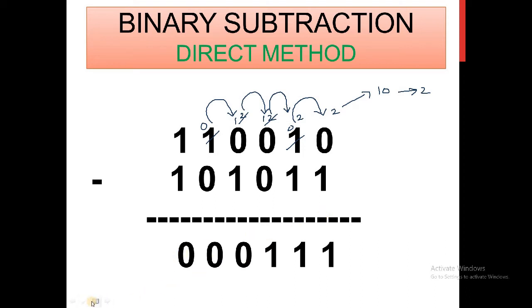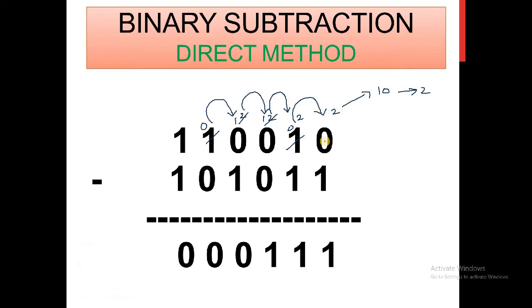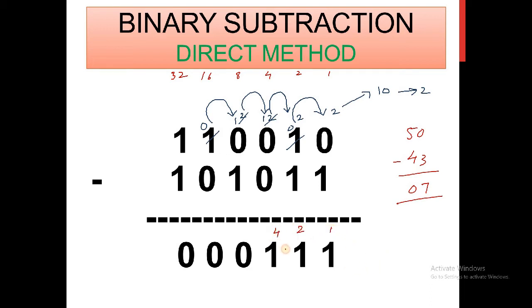You can verify this yourself by converting to decimal. The first number is 32 plus 16 plus 2, which is 50. From 50, we subtract 32 plus 8 plus 2 plus 1, which is 43. So 50 minus 43 gives 7. And 000111 in binary equals 4 plus 2 plus 1, which is 7. This proves we calculated the correct result. You need to practice a lot when using the direct method.